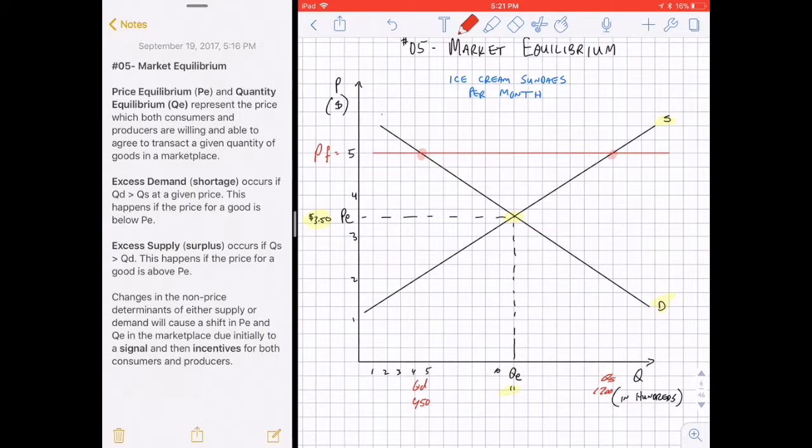This is actually the opposite of the scenario we just had. The quantity supplied now is greater than the quantity demanded. When the quantity supplied is greater than the quantity demanded, there's a surplus of goods in the marketplace. If there's an outside force that sets the price too high, there's going to be more ice cream sundaes being created and not enough being sold. In this case, we have 1,700 supplied and 450 sold at that price. So there's excess supply, an extra surplus in the marketplace.